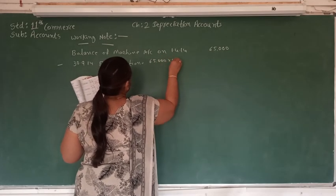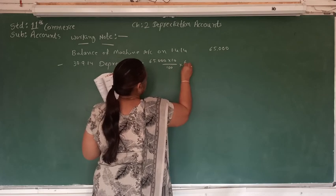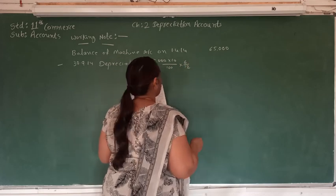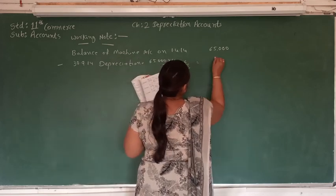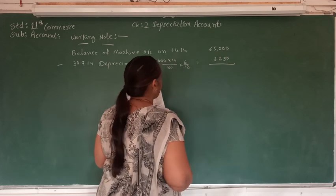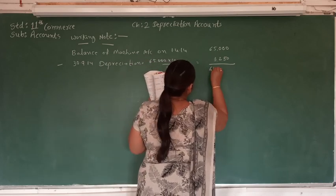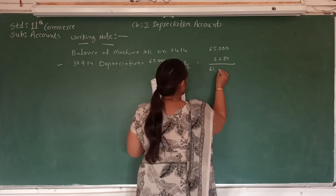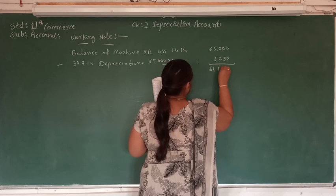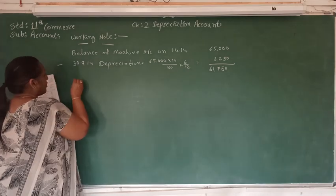So here: Rs. 65,000 at the rate of 10% depreciation, calculated for 6 months. So the amount of depreciation will be Rs. 3,250. If we deduct the depreciation from 65,000, the amount will be Rs. 61,750. This is called the book value of the machine on 30th September 2014.